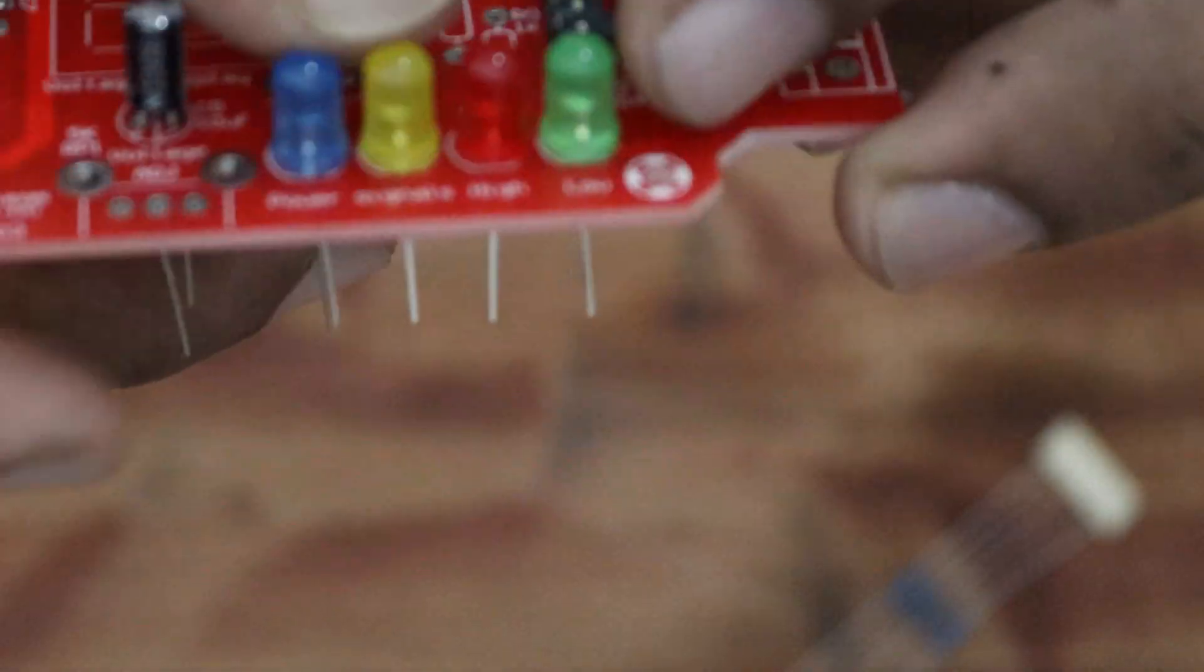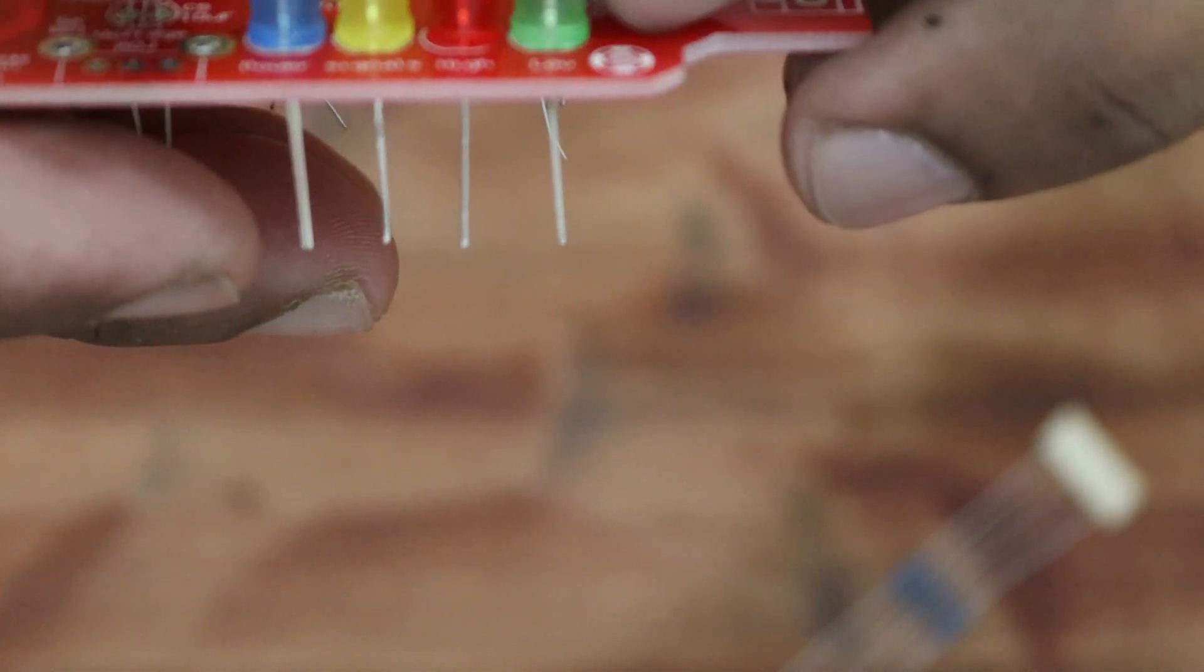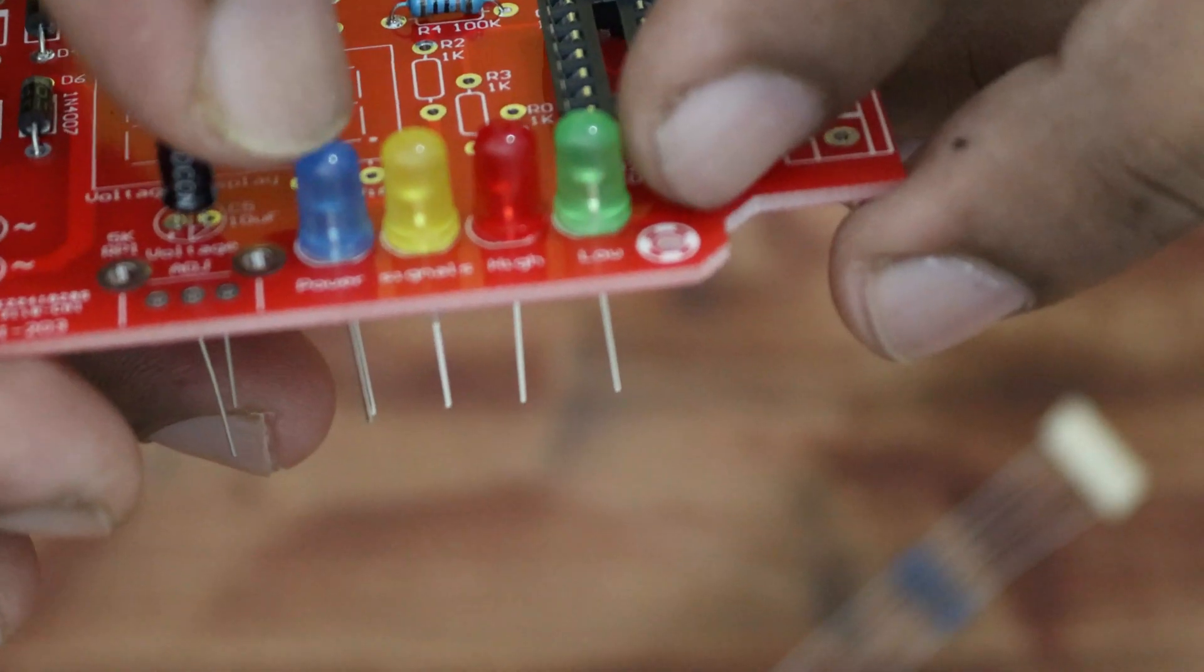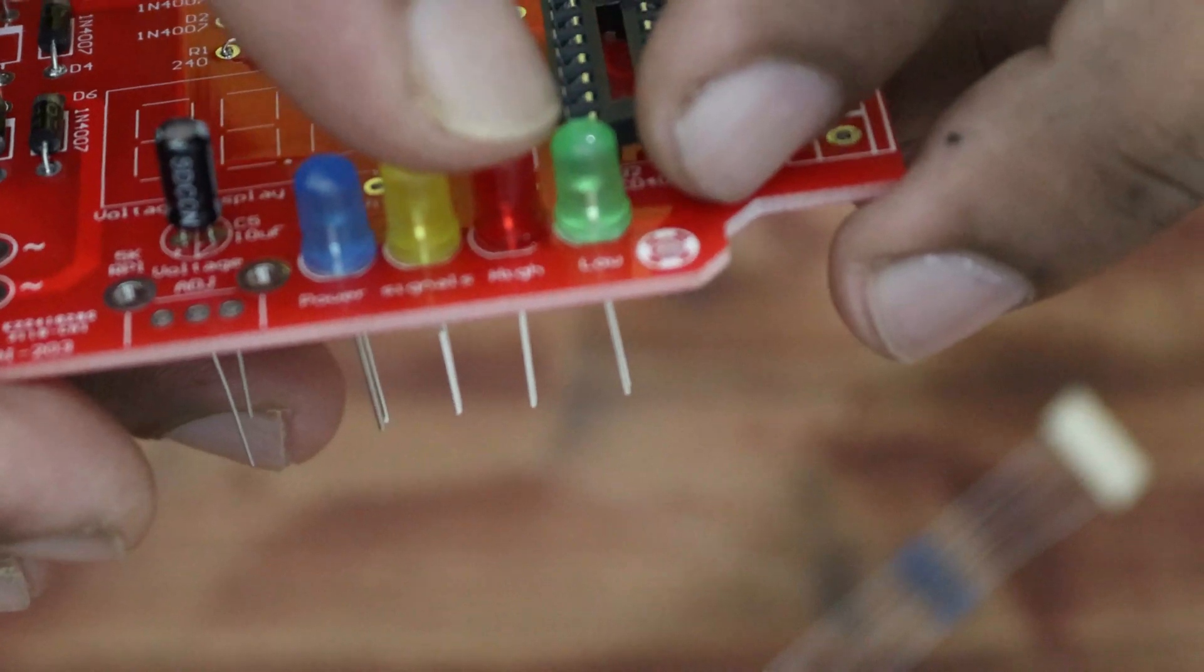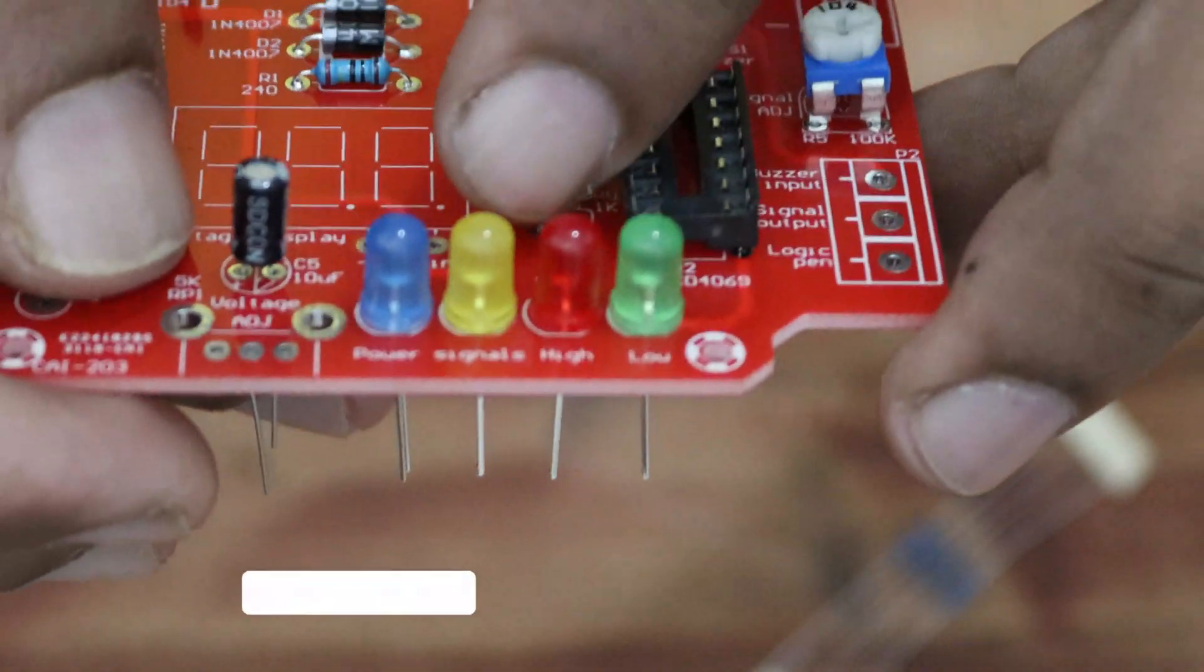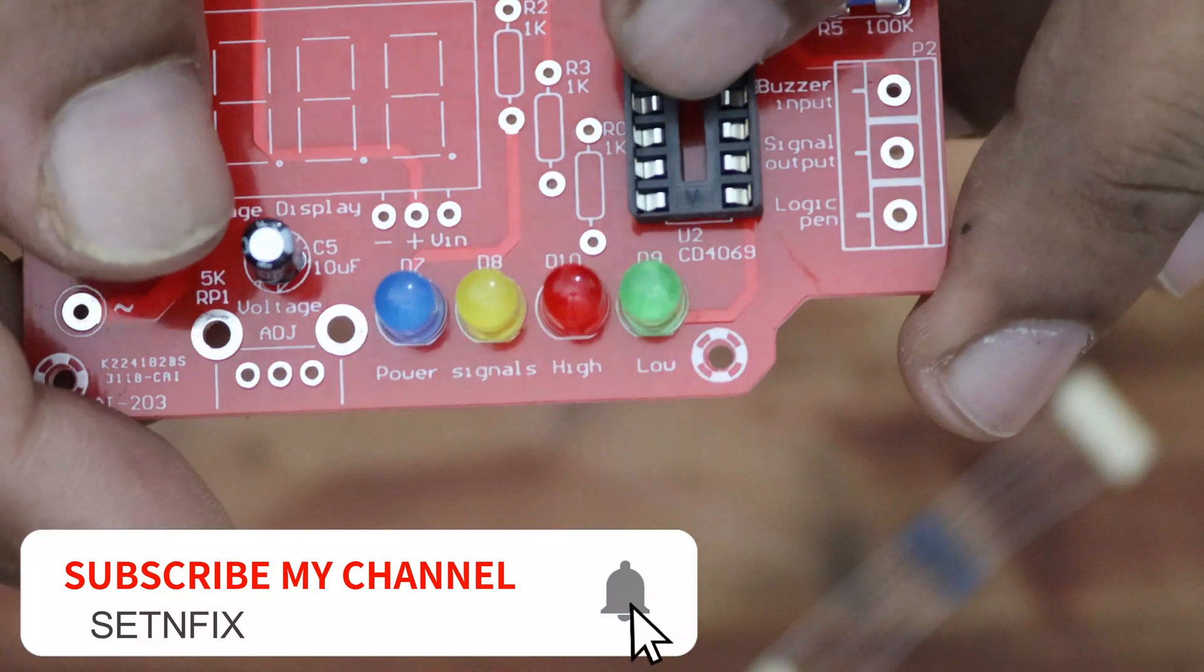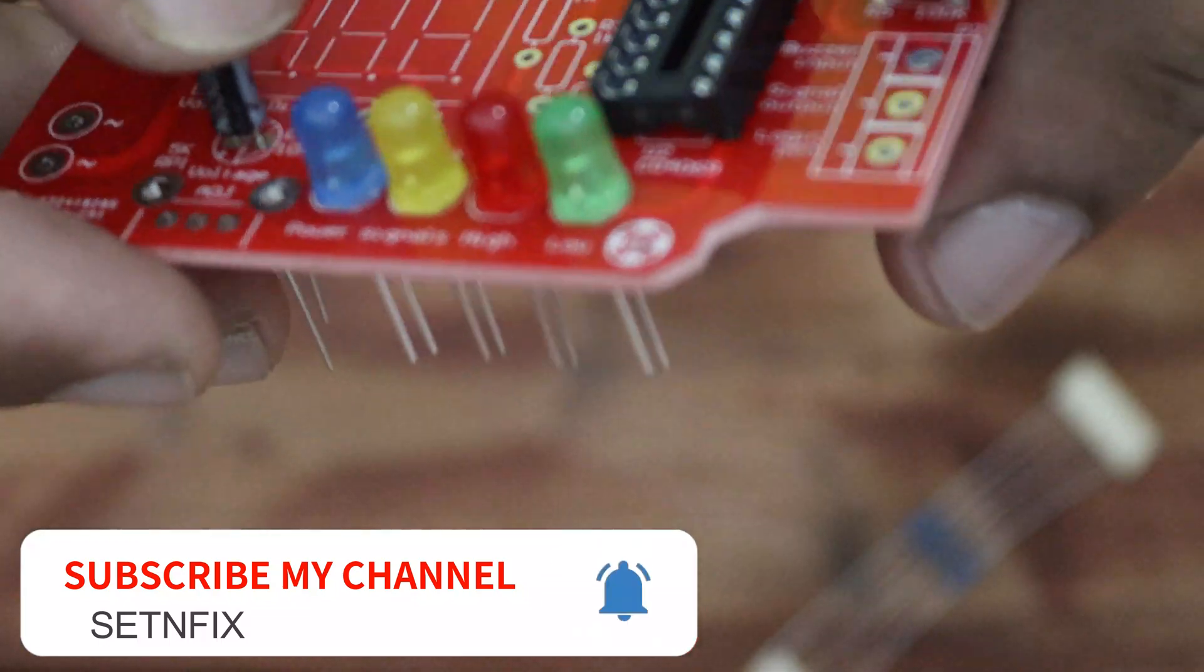There are 4 colors of LEDs marked on the board: B for blue, Y for yellow, R for red and G for green. You can solder those accordingly. Do not forget to solder the IC socket in the correct direction.